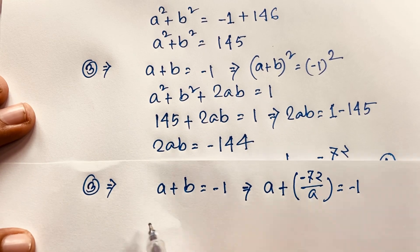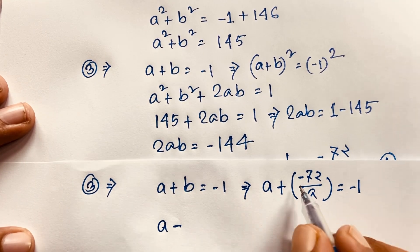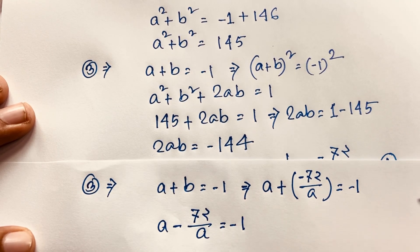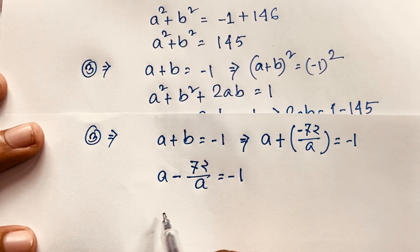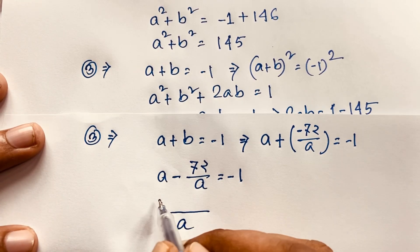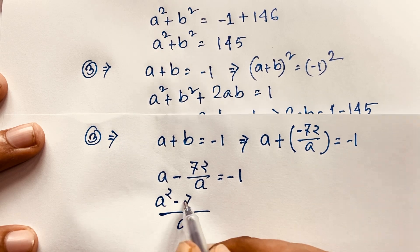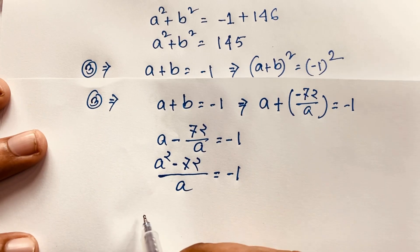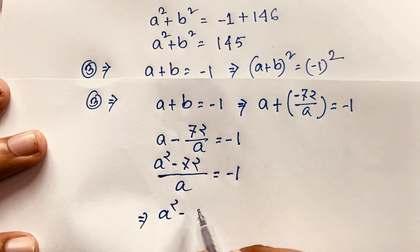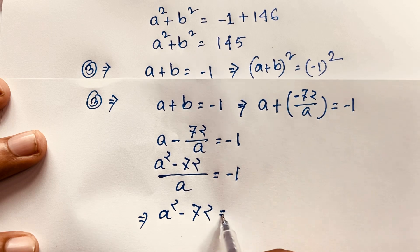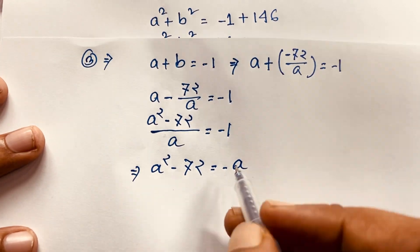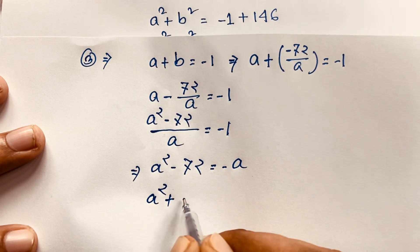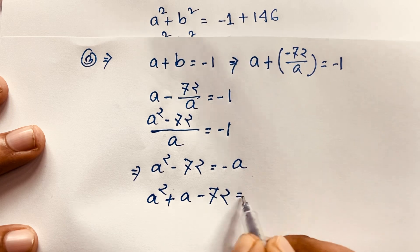Substituting b equals negative 72 over a into the expression gives a plus (negative 72 over a) equals negative 1. The least common denominator is a, giving a squared minus 72 over a equals negative 1. Multiplying both sides by a: a squared minus 72 equals negative a, so a squared plus a minus 72 equals 0.